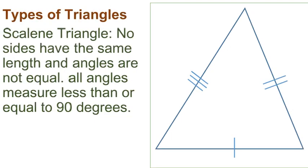Types of Triangles: Scalene triangle. No sides have the same length and angles are not equal. All angles measure less than or equal to 90 degrees.